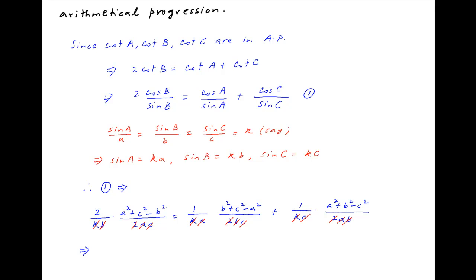2k abc cancels across the left hand side and the right hand side on the denominator. 2a square plus 2c square minus 2b square is equal to b square plus c square minus a square plus a square plus b square minus c square.